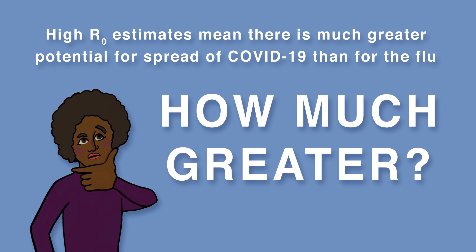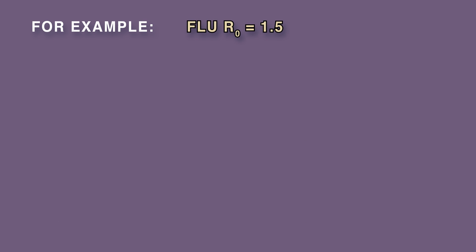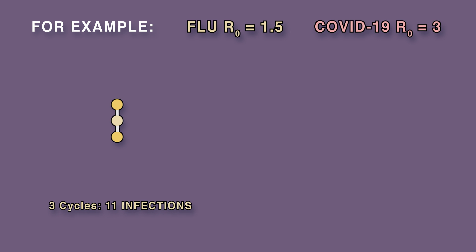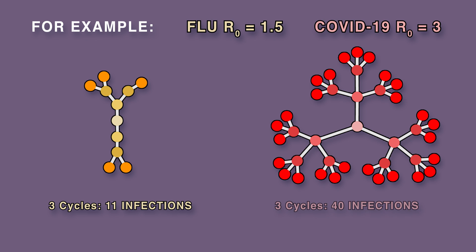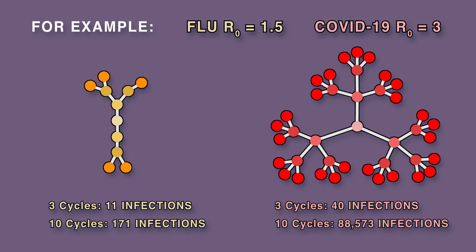These R-naught estimates mean there is much greater potential for spread of COVID-19 than for the flu. For the purpose of this example, let's say that the flu has an R-naught of 1.5 and COVID-19 has an R-naught of 3. After 3 cycles of infection, 11 people have had the flu and 40 people have been infected with COVID-19. But after 10 cycles of infection, this becomes 171 people with the flu and over 88,000 people with COVID-19.